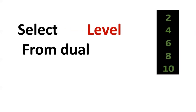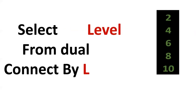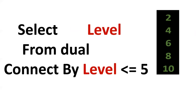Next one is to print even numbers from 1 to 10. Using CONNECT BY LEVEL we get 1, 2, 3, 4, 5. We want even numbers, so we need to multiply LEVEL by 2. The required output can be achieved this way.